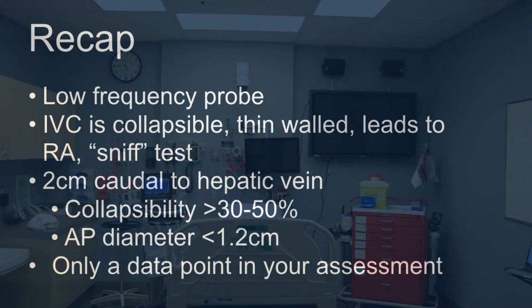We're all different sizes, right? But really flat IVCs and really dynamic states should be fluid tolerant. Look for collapsibility of 30–50% or greater, depending on the literature you read, and look for an AP diameter less than 1.2cm. Remember that a small IVC might appear to collapse less than a big dynamic one, and that patient might still need fluid. Always remember to use your clinical judgment first — this is only a useful data point in your patient assessment.